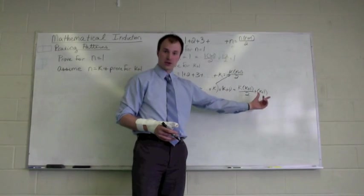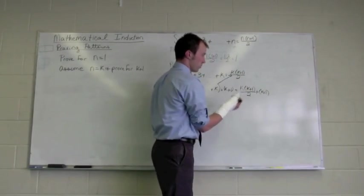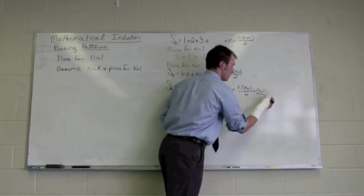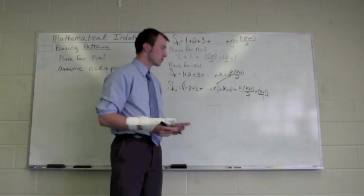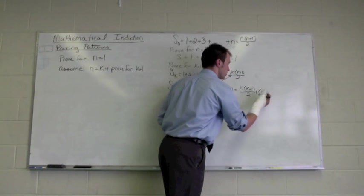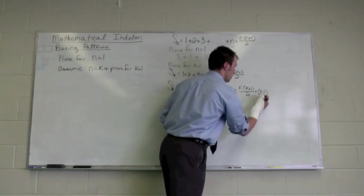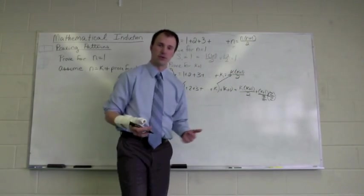Now these are two rational expressions. K times the quantity of k plus 1, all divided by 2, plus really it's the quantity of k plus 1 over 1. To add these fractions, we need a like denominator. So to change that from a 1 to a 2, we need to multiply both numerator and denominator by the number 2.